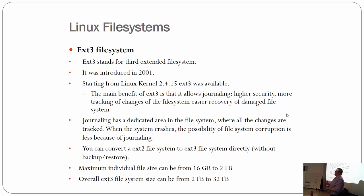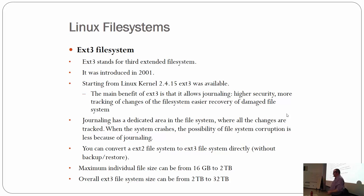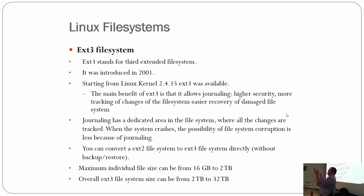EXT3 — Third Extended File System — came out in 2001 with kernel 2.4. It added journaling and higher security. Changes to the file system are tracked, and you can have auditing to see which user changed which files. Every change writes a journal entry recording who did what and when. You can convert an ext2 file system to ext3 with a simple command — upgrade in place, instantly. File size limitations are the same as ext2.